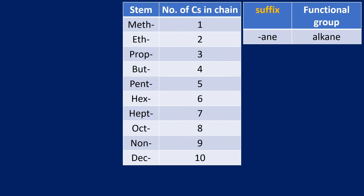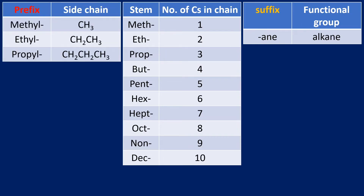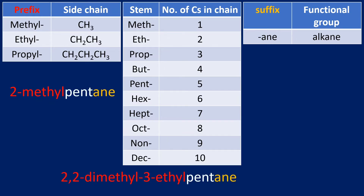In terms of the stem, we don't need to go beyond ten carbons. For example, 'pent' is five carbons and 'oct' gives octane for eight carbons. For the prefix, I'm going to limit this video to methyl, ethyl, and propyl — there are numerous other prefixes, but these three are sufficient for BTEC Applied Science Unit 5. A methyl side chain is a CH3 group, and we'll look at examples of drawing those molecules using the naming rules towards the end of the video.